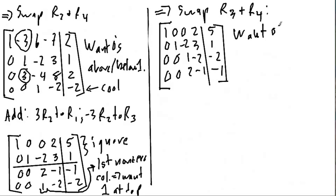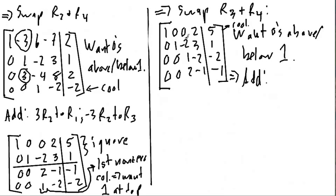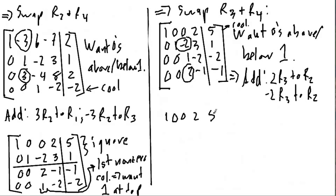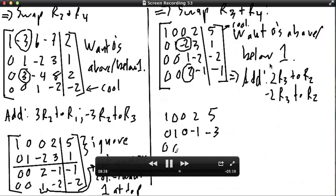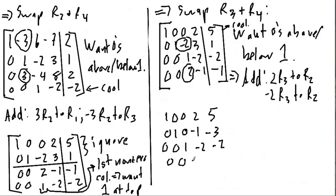Now we have a leading 1 in the third row and we want to get zeros above it and below it. The first row is cool because there's already a zero above the 1 — I only have to worry about the second row and the fourth row. So I'm going to add 2 times row 3 to row 2 to get rid of that negative 2, and I'm going to add negative 2 times row 3 to row 4 to get rid of that 2.